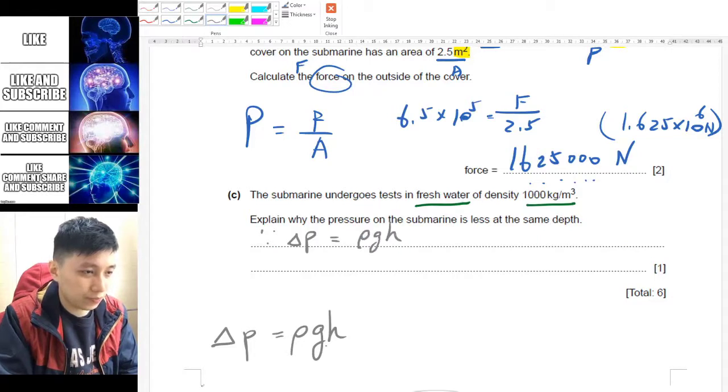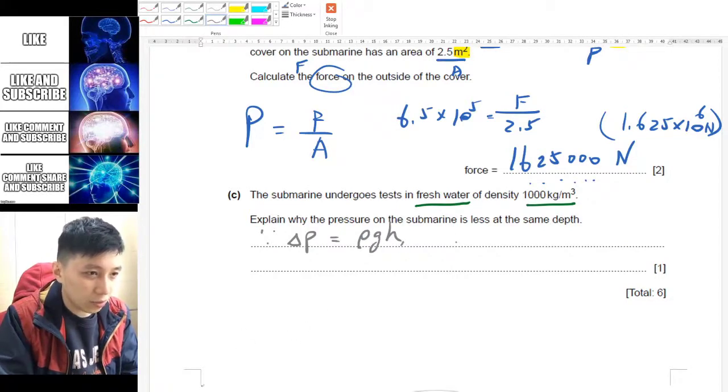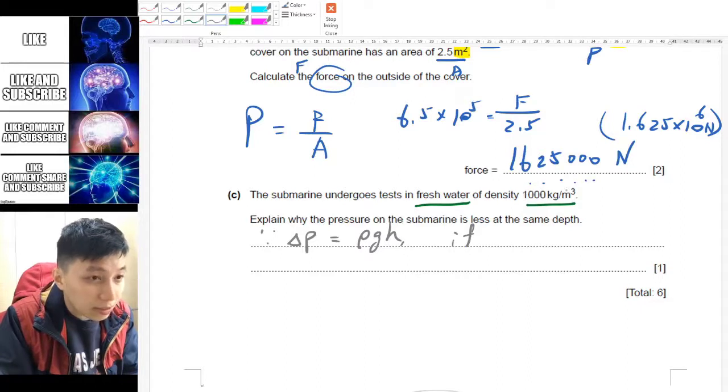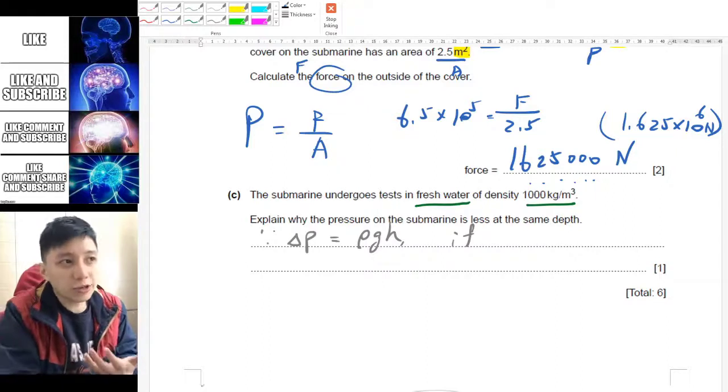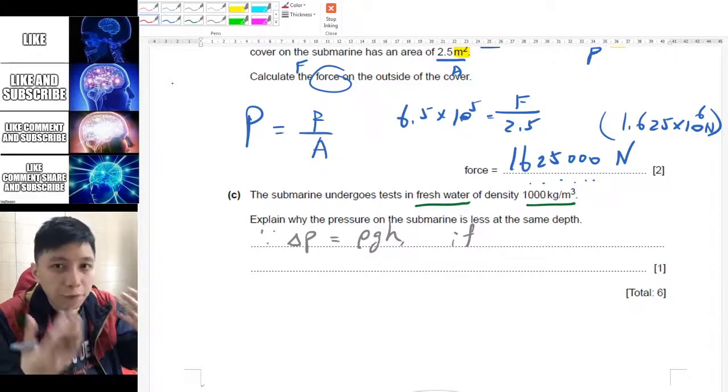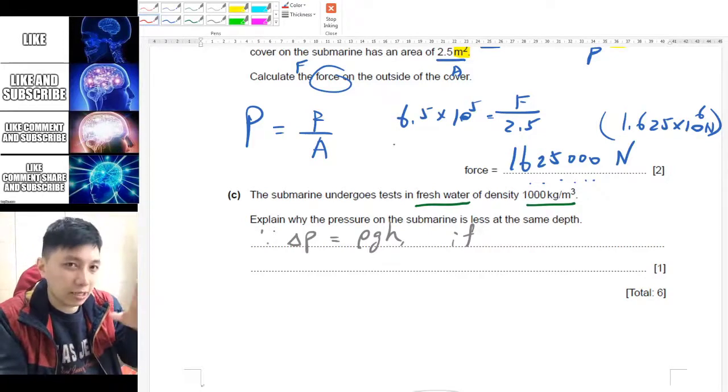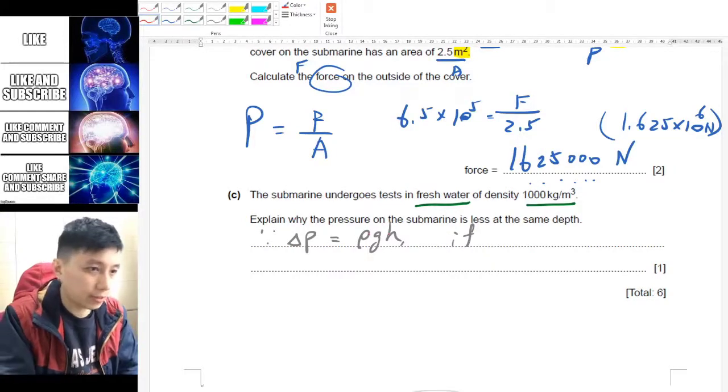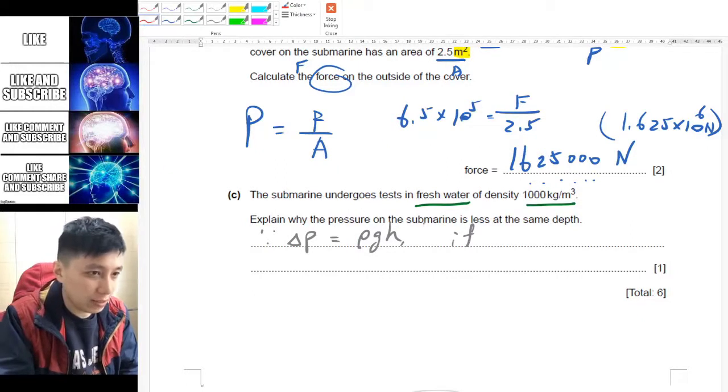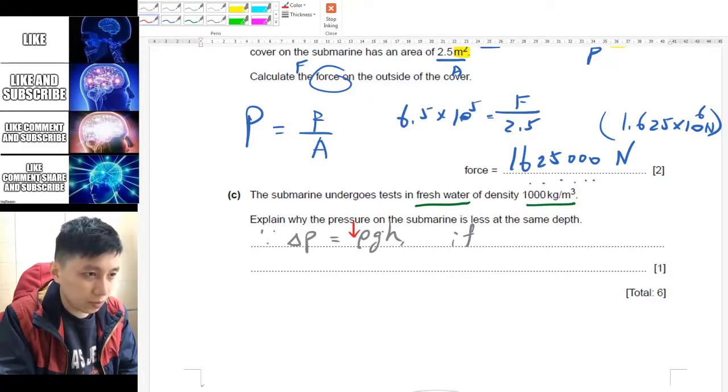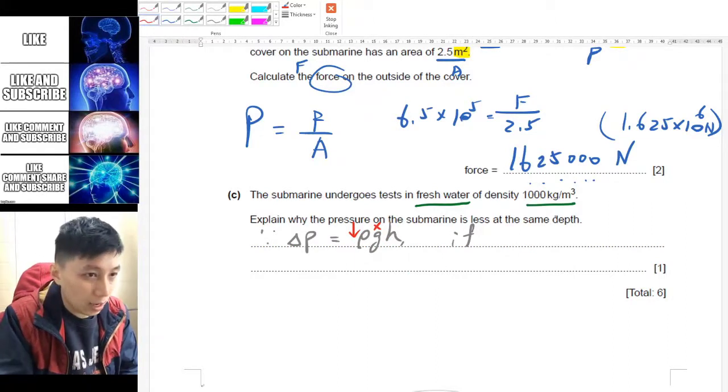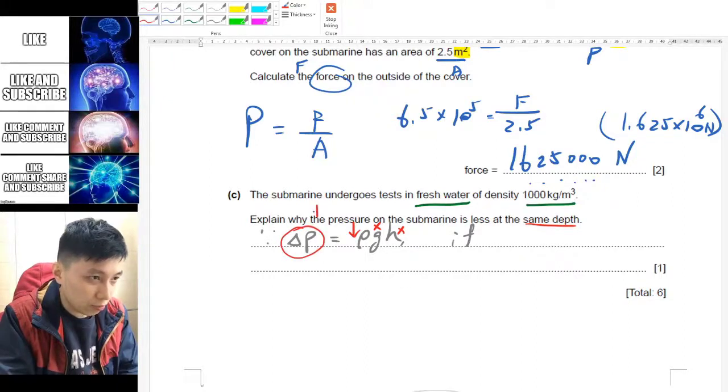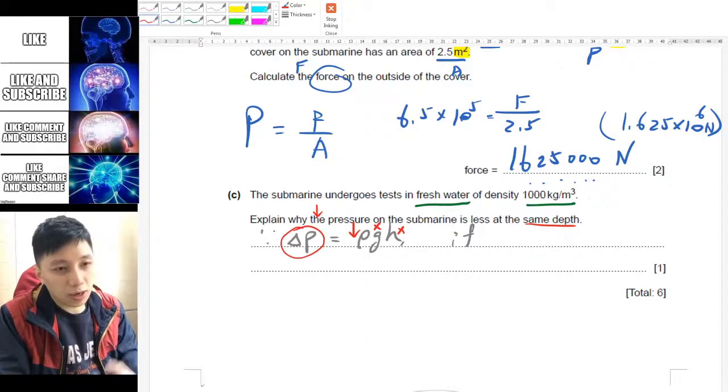The equation that we should use is delta P equals ρgh. If the density now you can see it changed, right? So here I will show you the notation. However this is not going to be the official presentation you can write, so you have to convert that into a sensible logical sentence. But you should have to plan first. So the plan is since ρ decreases, g doesn't change so I'll put a cross next to it because you're on the same planet, and then it's at the same depth so h doesn't change as well, and therefore the pressure will be less.